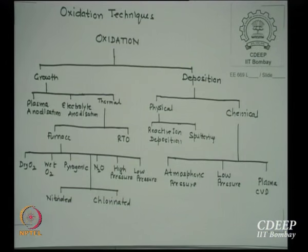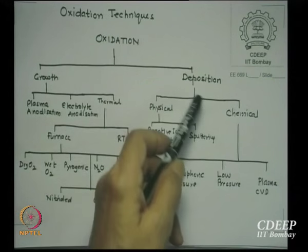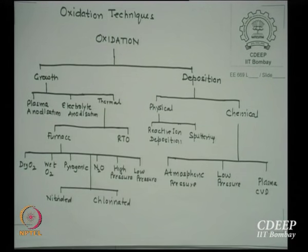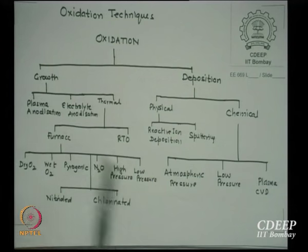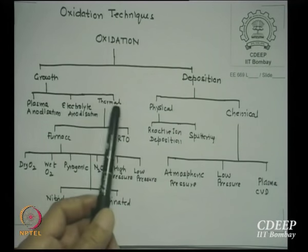There are two techniques. One is growth — you must have silicon to create silicon dioxide by growth. The alternate method is deposition, in which the substrate is unimportant; I can deposit silicon dioxide on any surface. The growth methods can be plasma anodization, electrolyte anodization, and thermal.